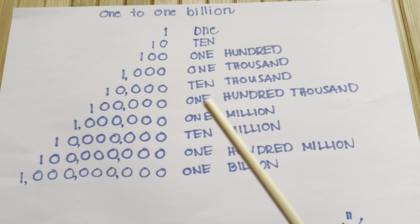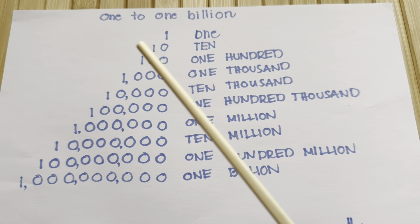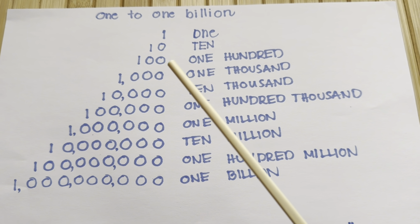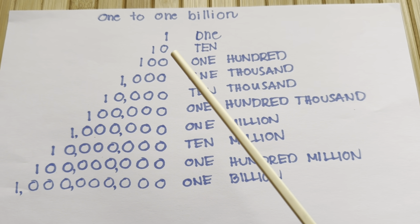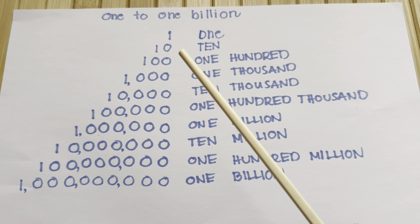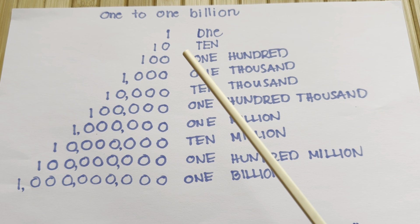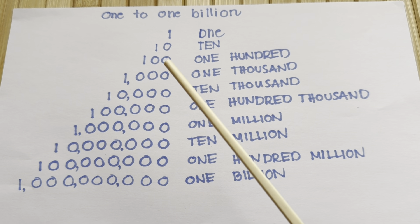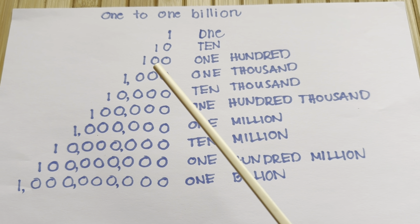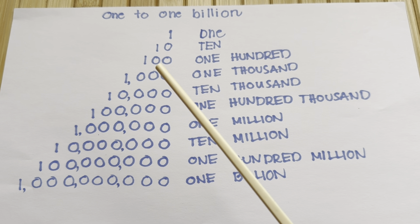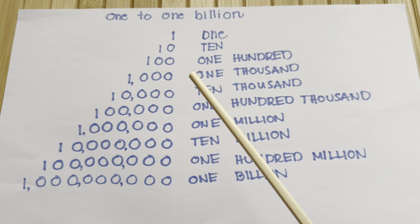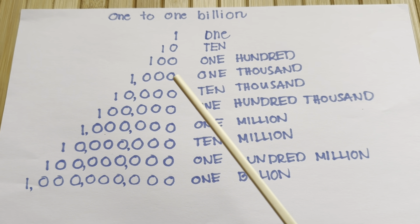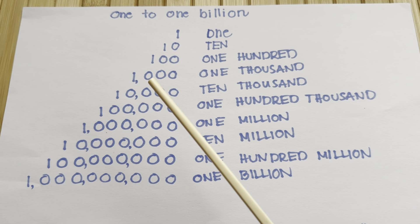And now join me to count how many zeros from one to one billion. Let's begin. In ten, we have one zero. In one hundred, we have two zeros — one, two. There are three zeros in one thousand — one, two, three.